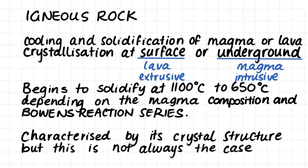Firstly we will have a look at igneous rocks. The majority of the earth is actually made up of igneous rocks and it forms from the solidification of molten rock, that is either magma or lava. This crystallization of the molten rock can occur either at the surface or underground. The molten rock will solidify at temperatures from 1100 degrees to 650 degrees depending on the composition of the rock and according to Bowen's reaction series.